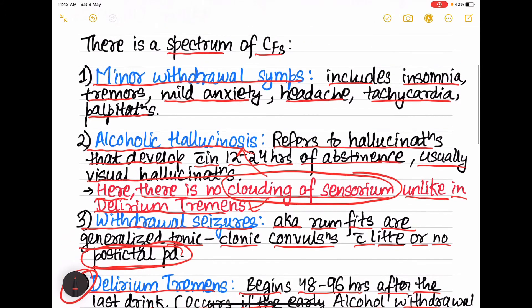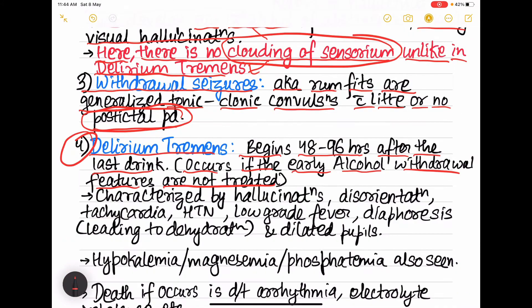Characterized by hallucinations, disorientation, tachycardia, hypertension, low-grade fever, diaphoresis, that is excessive sweating which leads to dehydration, and finally there is dilated pupils.